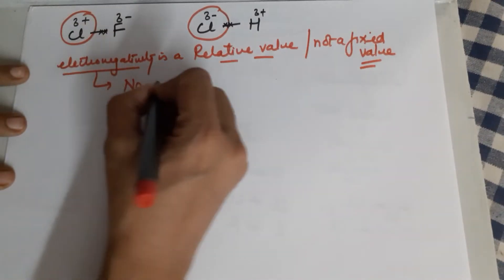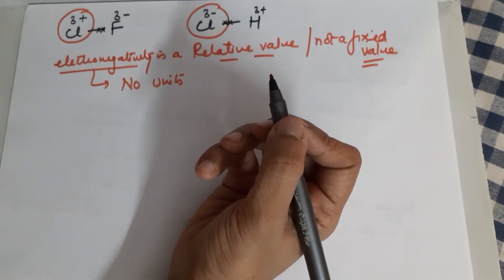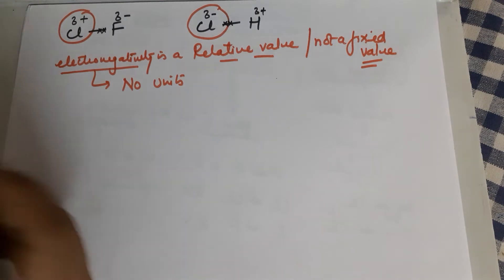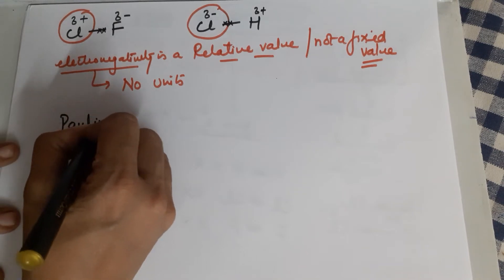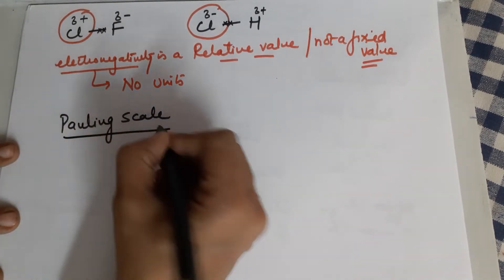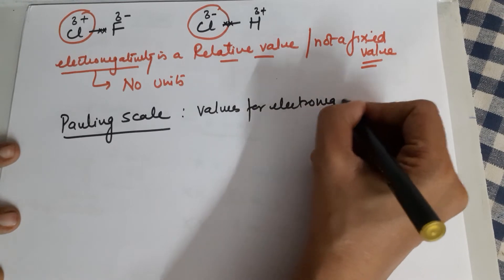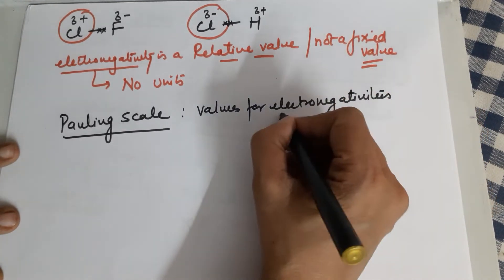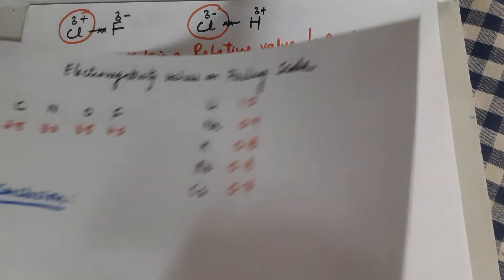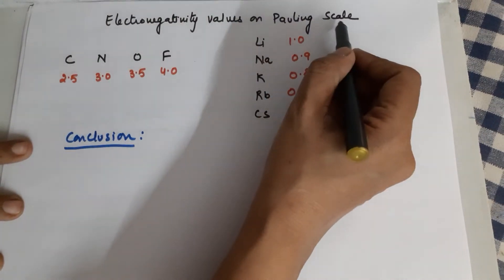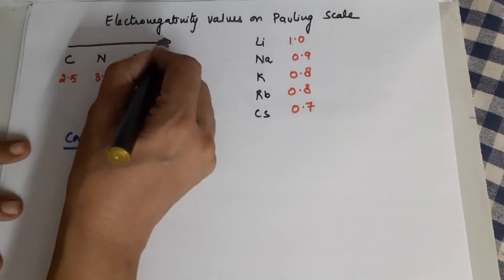Since electronegativity is merely a tendency and a relative value, it has no units. Now, to measure electronegativity, there is the Pauling scale which gives us values for the electronegativities of atoms. These are the values we normally use. According to the Pauling scale, let's look at electronegativity values for carbon, nitrogen, oxygen, and fluorine — deliberately taken across a period.